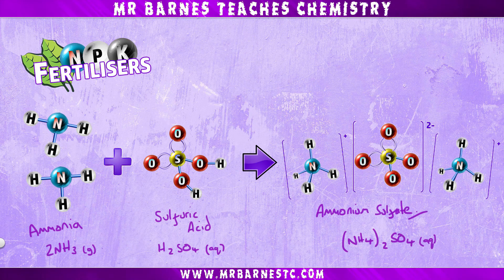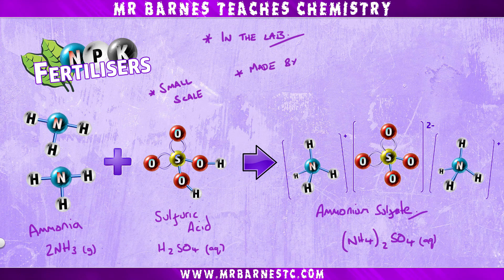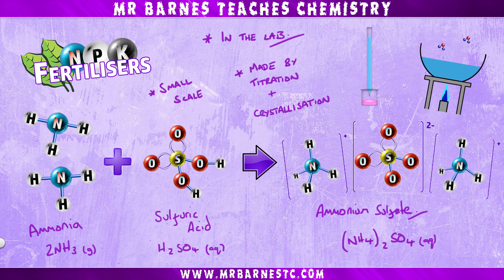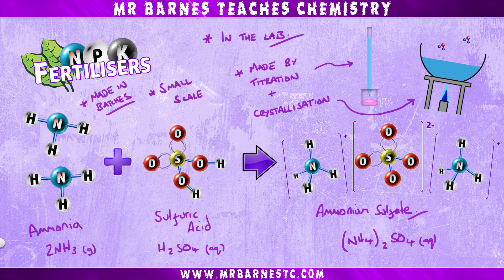Some key things to remember about producing ammonium sulfate in the lab: it's on a small scale so you only get a small amount. It's also made by titration and then crystallization — you react the two together, then evaporate off the water giving you crystals of ammonium sulfate. And finally, it's made in batches, which means you just make it when you need it.